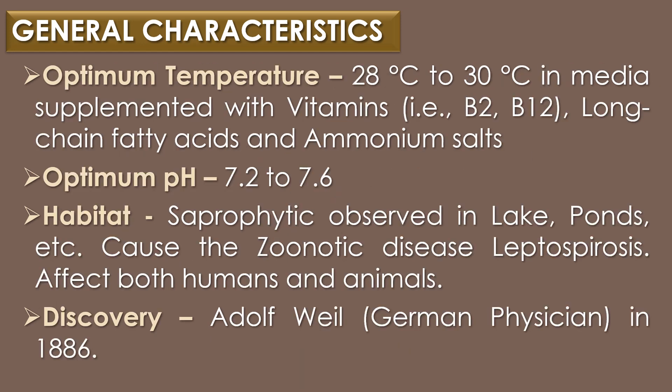The optimum temperature required for the cultivation of Leptospira introgons is 28°C to 30°C in media supplemented with vitamins like vitamin B2 or vitamin B12, long-chain fatty acids, and ammonium salts. Optimum pH is 7.2 to 7.6. Leptospira introgons are saprophytic in nature and frequently observed in stagnant water bodies like lakes and ponds. The infectious agent causes the zoonotic disease Leptospirosis, affecting both humans and animals. Leptospira introgons was discovered by the German physician Adolf Weil in 1886, and so Leptospirosis is also called Weil's disease.